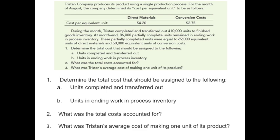Here we have Tristan Company. They produce their product using a single production process. For the month of August, the company determined its cost per equivalent unit to be: $4.20 for materials and $2.75 for conversion. During the month, Tristan completed and transferred out 410,000 units to finished goods inventory. At month end, 86,000 partially completed units remained in ending work in process, equal to 69,000 equivalent units of direct materials and 50,000 equivalent units of conversion costs.